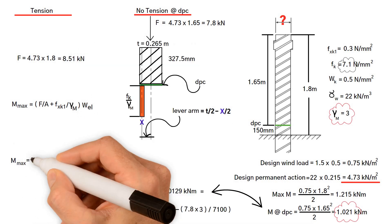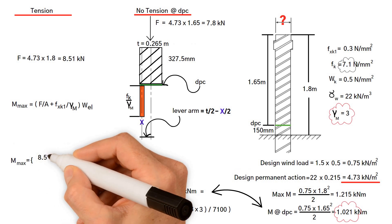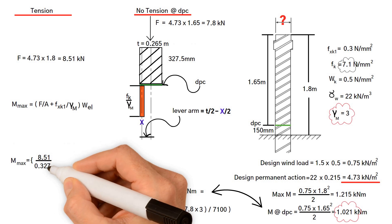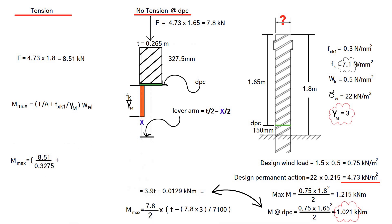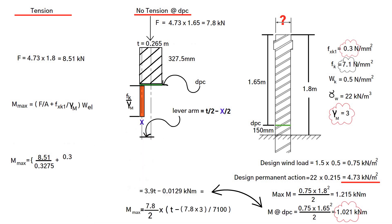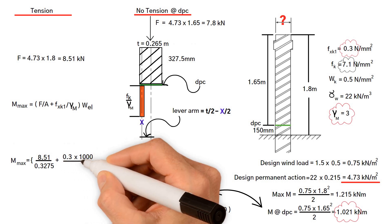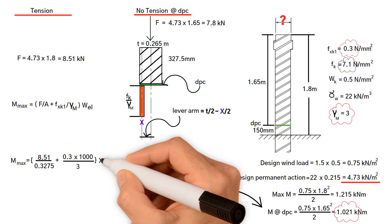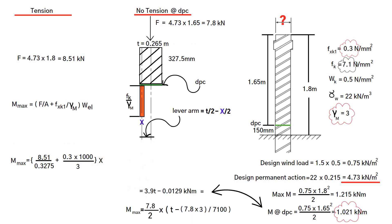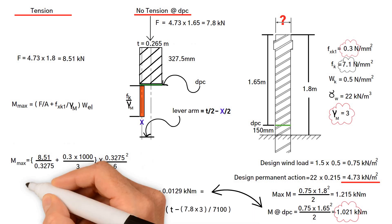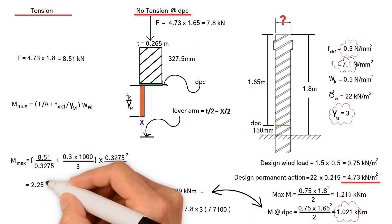Maximum moment equals open bracket vertical force 8.51 divided by area, which is 0.3275 meters times 1 meter, plus characteristic tensile bending strength 0.3, which should be multiplied by 1,000 to convert to kN/m², divided by the partial safety factor 3, close bracket, multiplied by the elastic section modulus 0.3275 squared divided by 6.